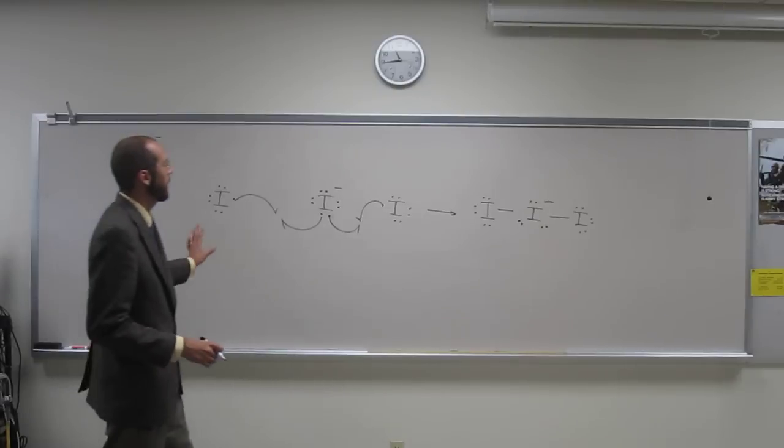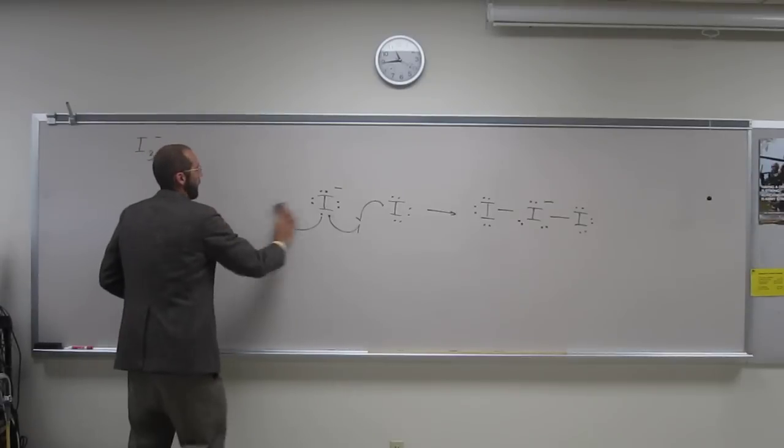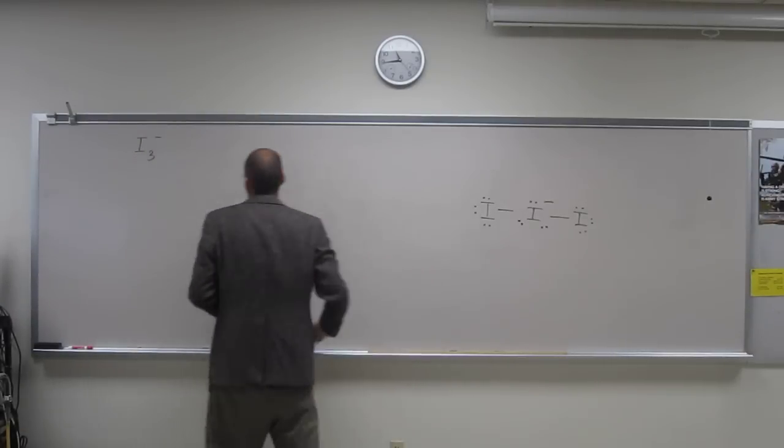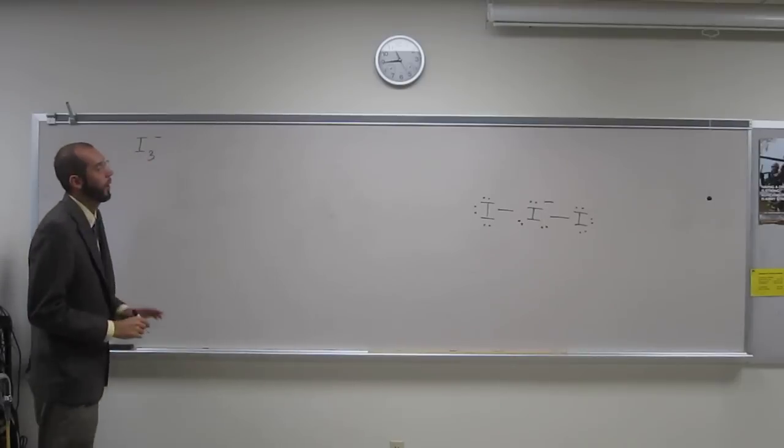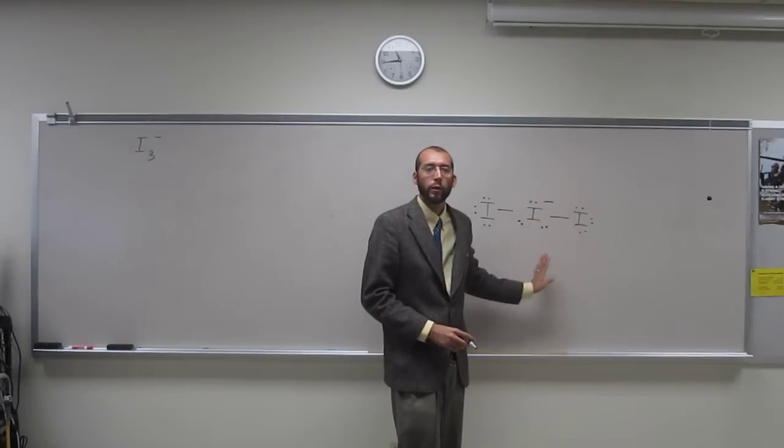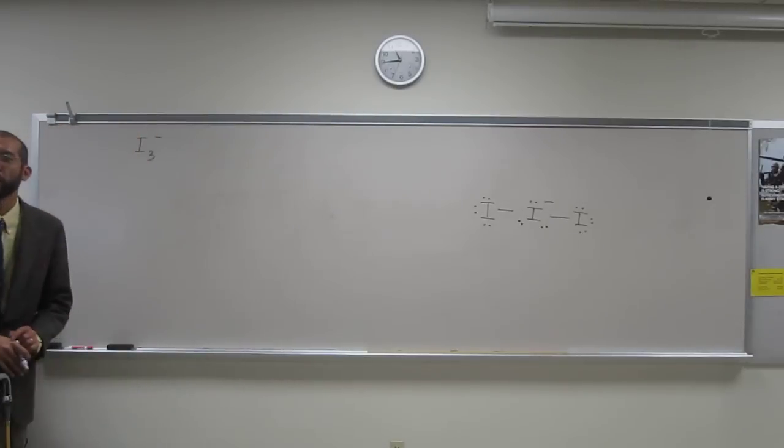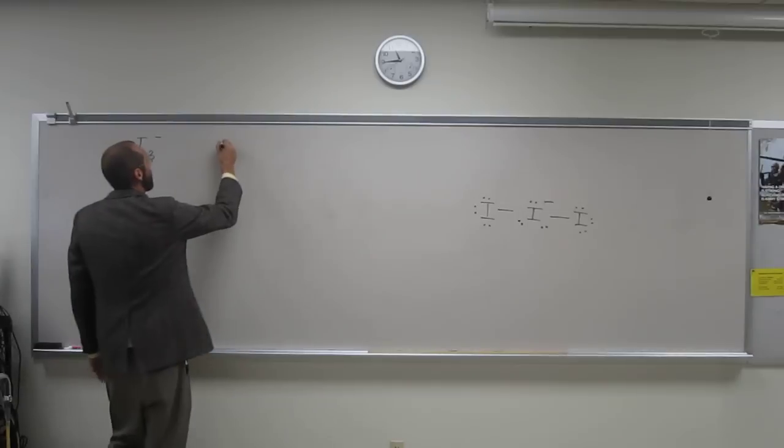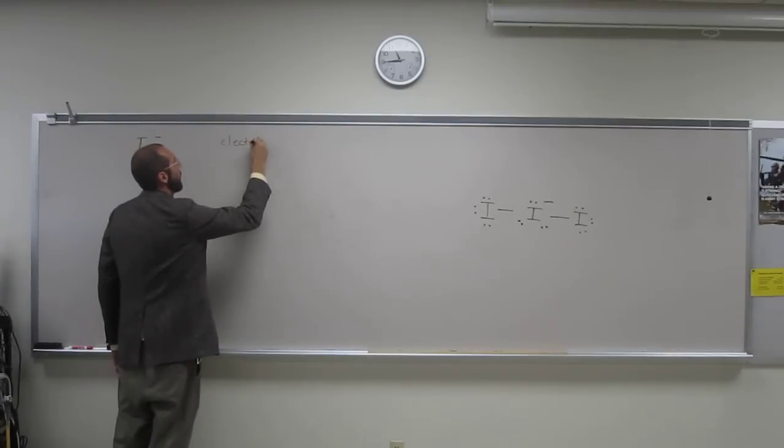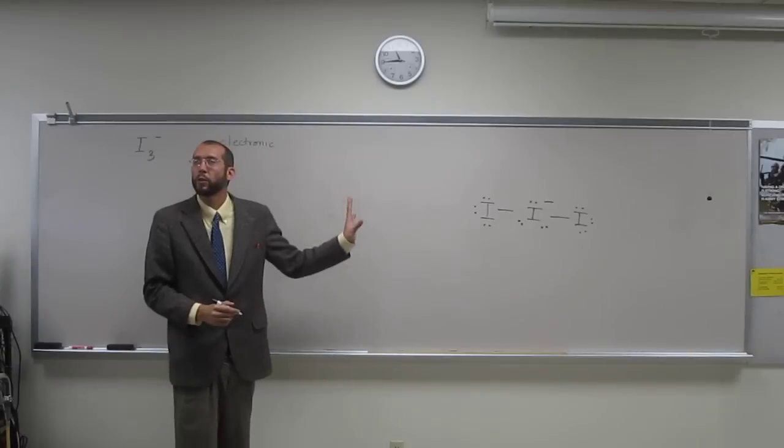So, is everybody okay with me erasing this side? So, hopefully you guys can tell me how many electron groups are around the central atom, because that, I guess I gave it away. What does that determine? If you tell me now the number of - Electronic geometry. The electronic geometry, right? So, let's figure out what the electronic geometry is. What is the electronic geometry? How many groups does it have around?